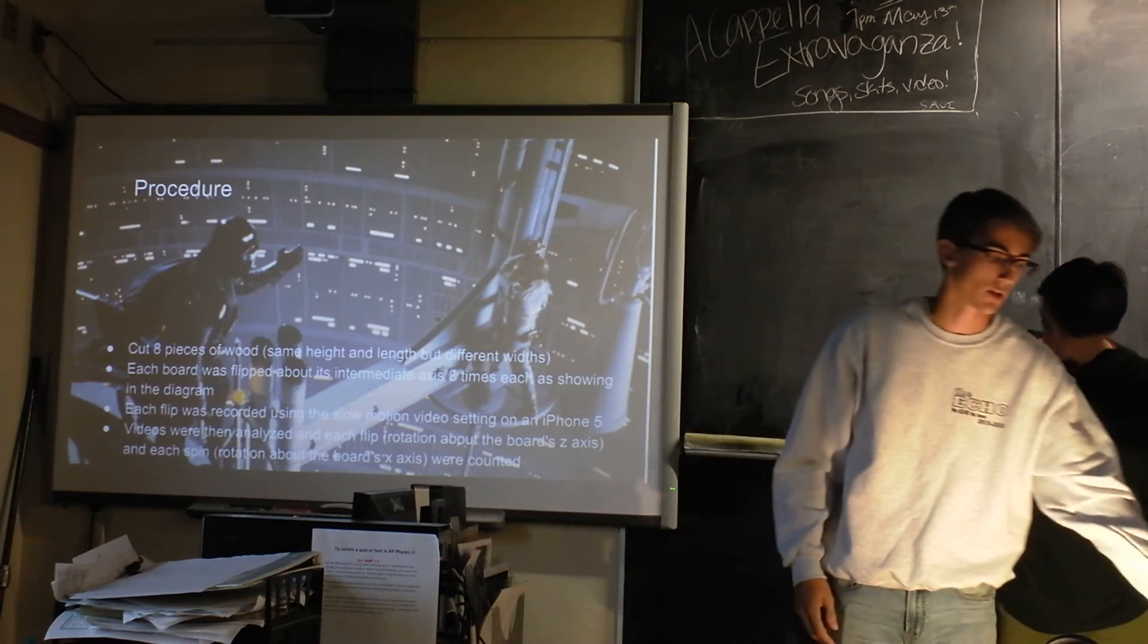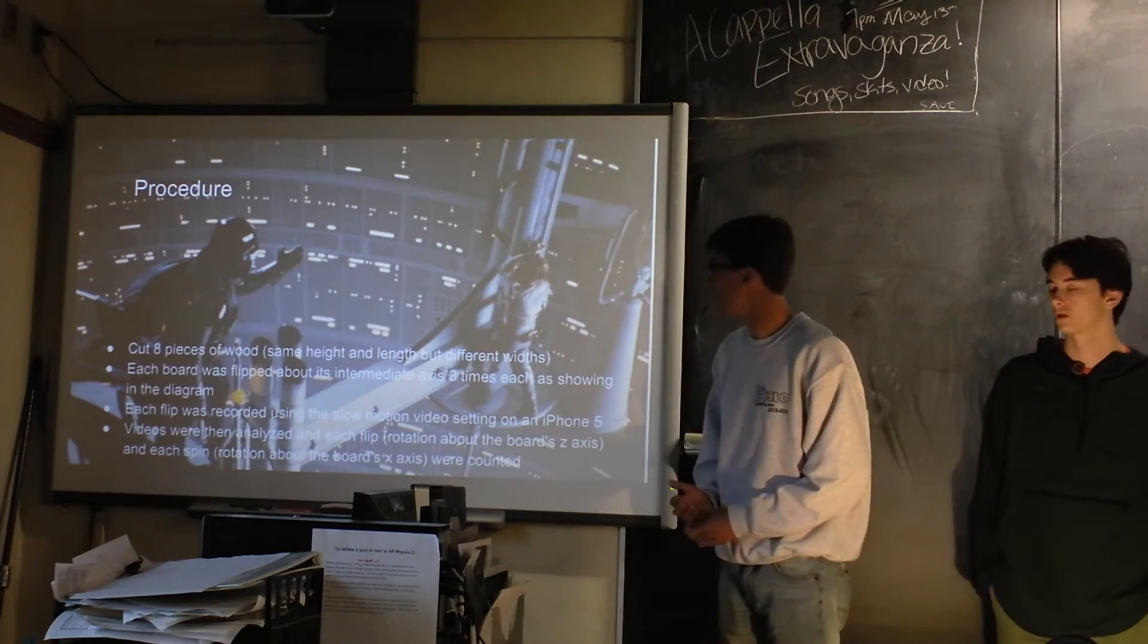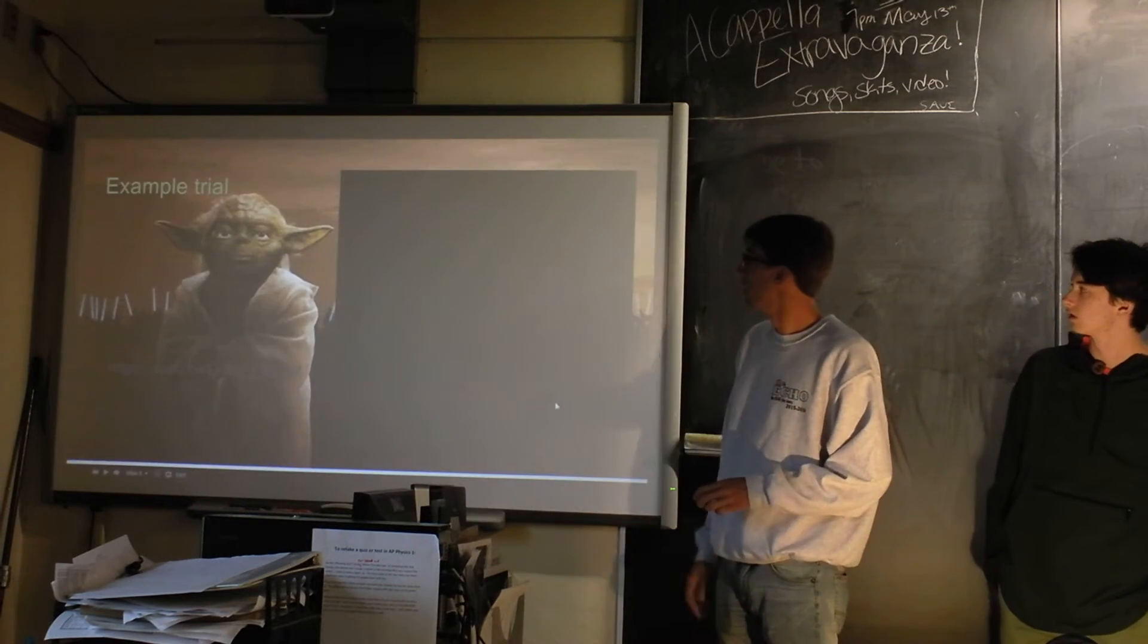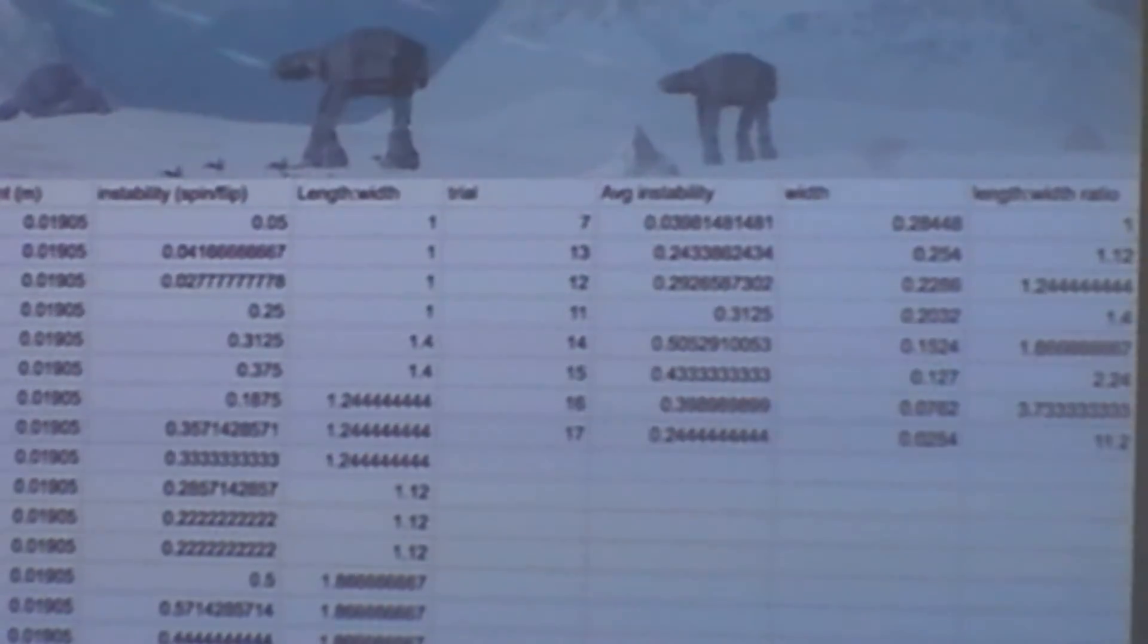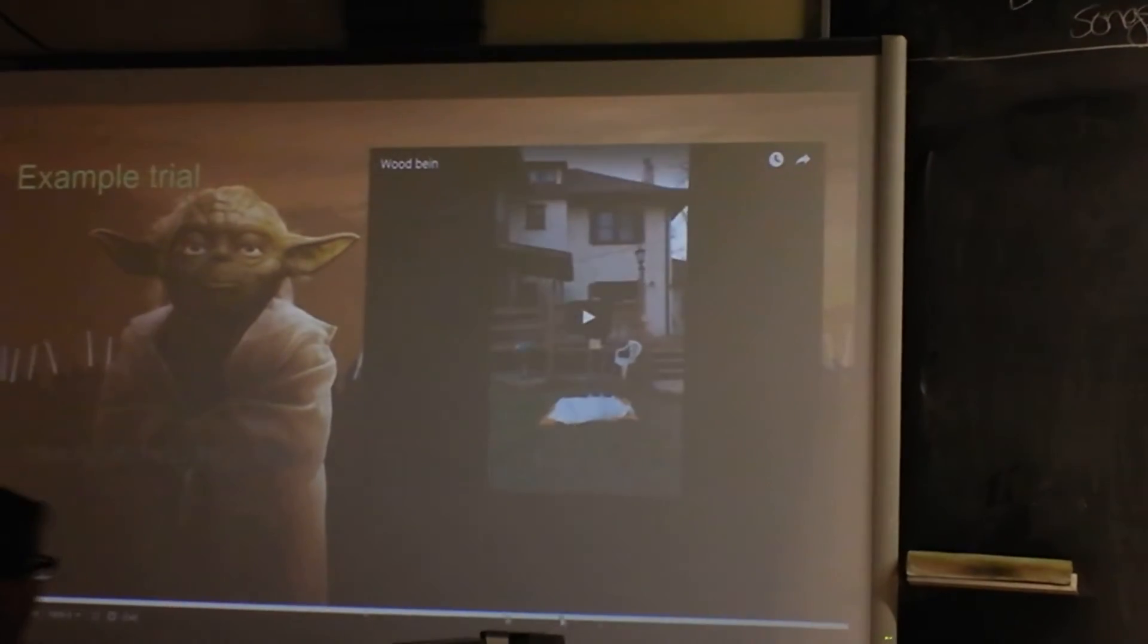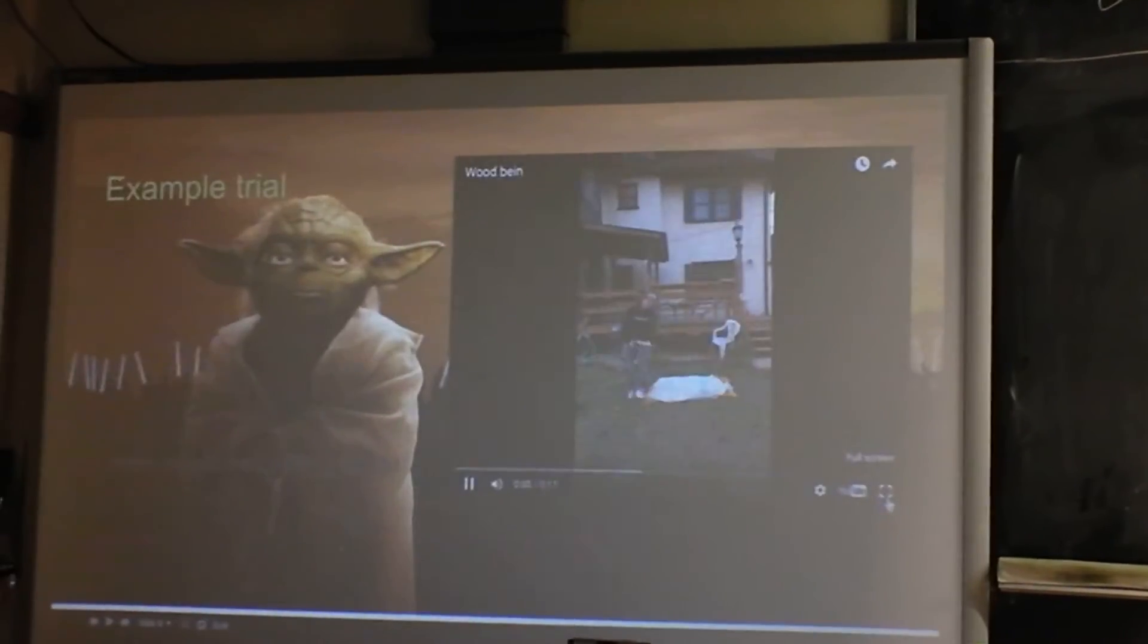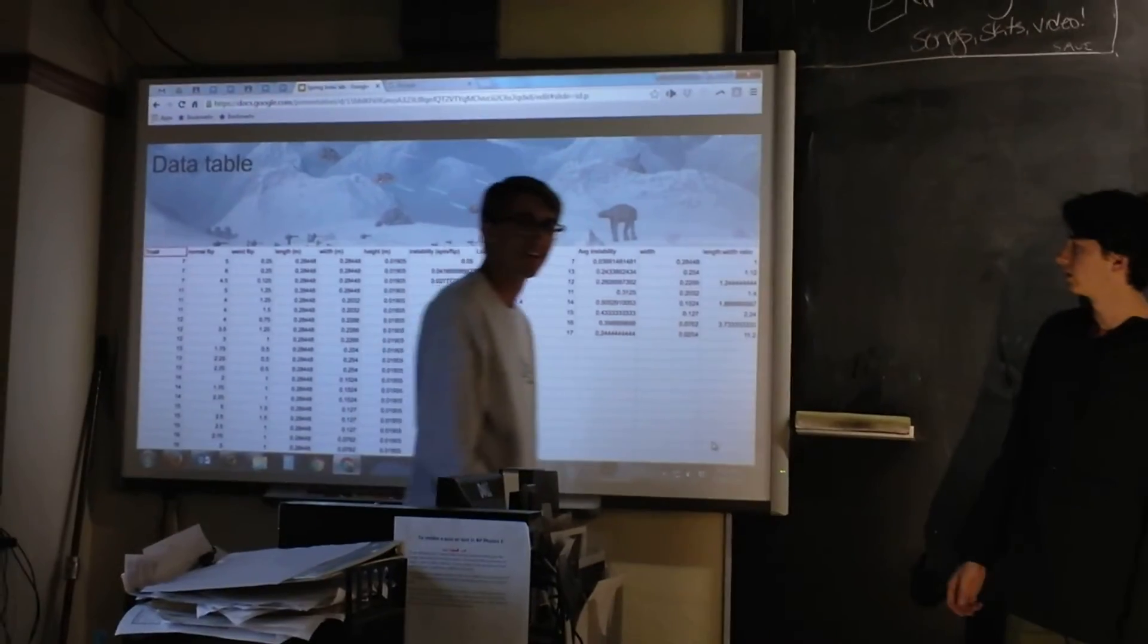We looked at that and said, oh, it flips this so many times, it spins this so many times. And we used that ratio of spin to flip to determine sensitivity. And here's an example trial. Full screen. Oh, that's not full screen. Close. Is that your house, Jack? I'm not telling you. It looks like David's.